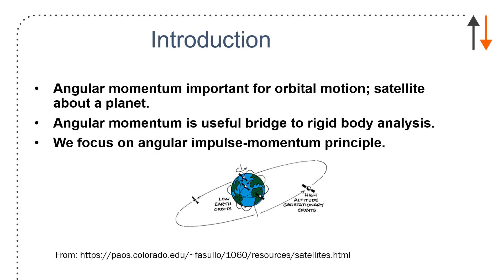Angular momentum is important for orbital motions, satellite about a planet. This is something from a Colorado course on sustainable development. How do you launch a satellite and how do you make sure it stays in orbit? You can see the two types of orbits there.